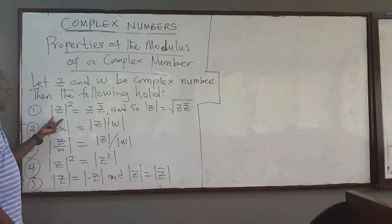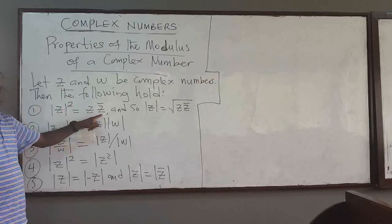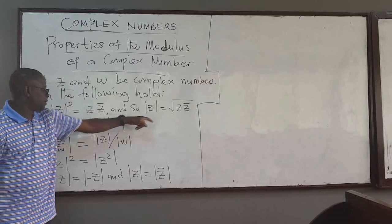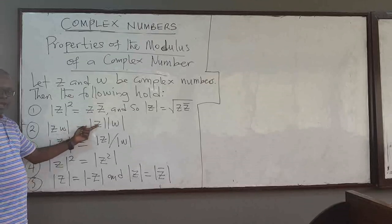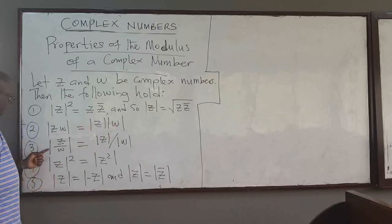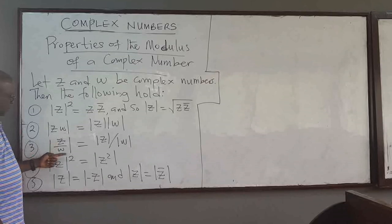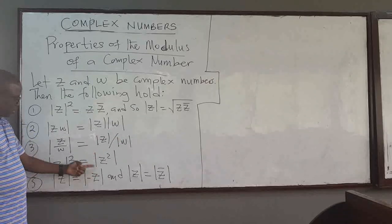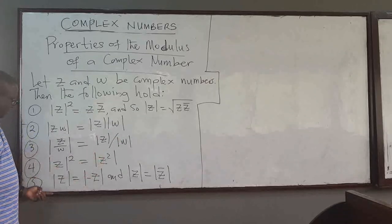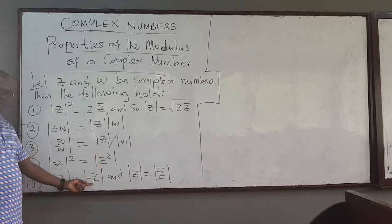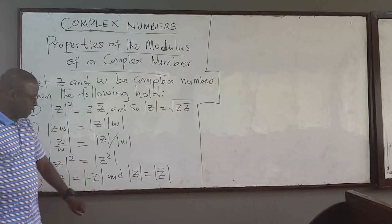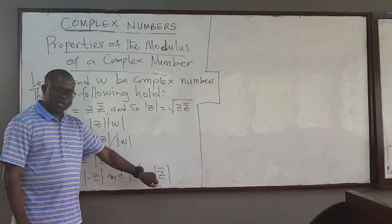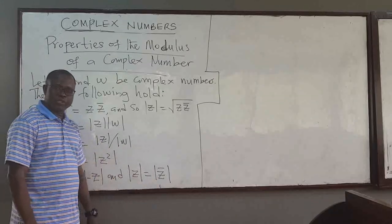The first one says that the absolute value of Z squared is equal to the product of Z and the conjugate of Z. The second says that the modulus of the product is equal to the product of the moduli. The modulus of Z over W is the modulus of Z divided by the modulus of W. The modulus of Z squared is equal to the modulus of Z, squared. The modulus of the complex number is the same as the modulus of the negative of the complex number. And the modulus of Z is equal to the modulus of the conjugate.